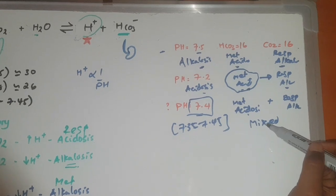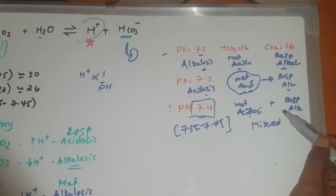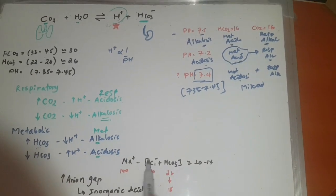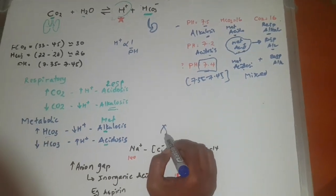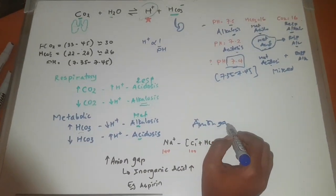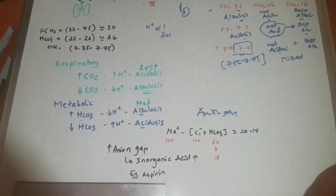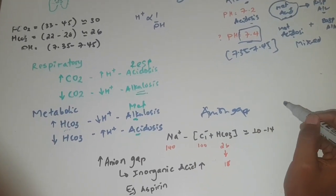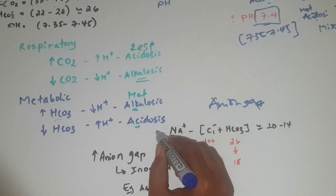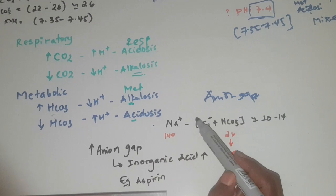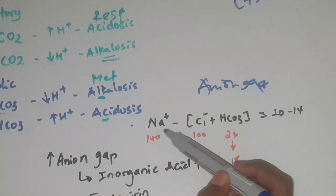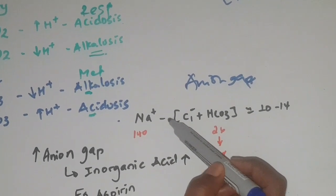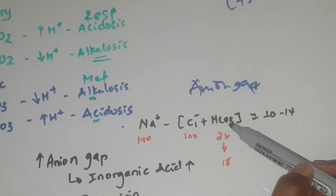We have to mix it equally and carefully. The pH shows a pattern of metabolic acidosis. The anion gap is calculated as sodium minus chloride plus bicarbonate.